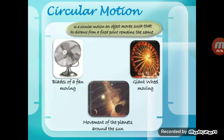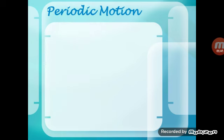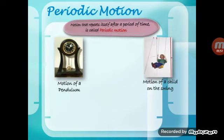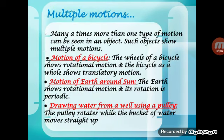Circular motion is similar to rotational motion. In circular motion, an object moves such that its distance from a fixed point remains the same, tracing a circle. Examples are the blades of a fan, a moving giant wheel, and the movement of planets around the Sun. Periodic motion examples include the motion of a pendulum, a branch of a tree moving, and a child on a swing.